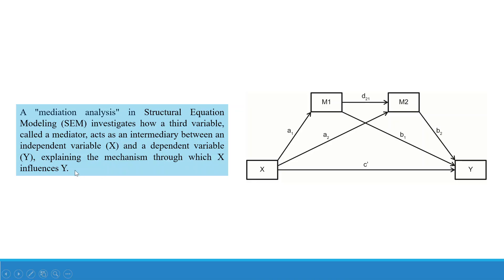Let's understand the concept of serial mediation. x influences y directly. x influences y through m1 — so x influences m1, and m1 influences y. x influences y through m2 — so x influences m2, and m2 influences y. But there is one more path: x affects m1, m1 influences m2, m2 influences y. This is known as serial mediation.